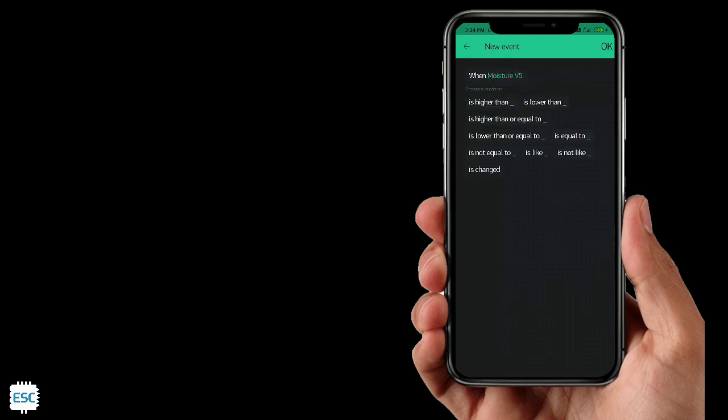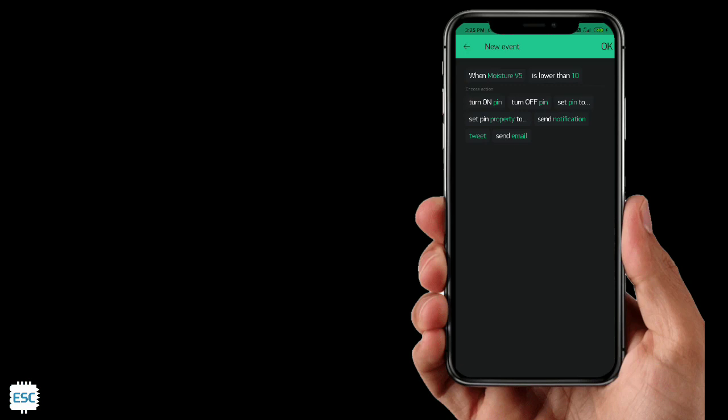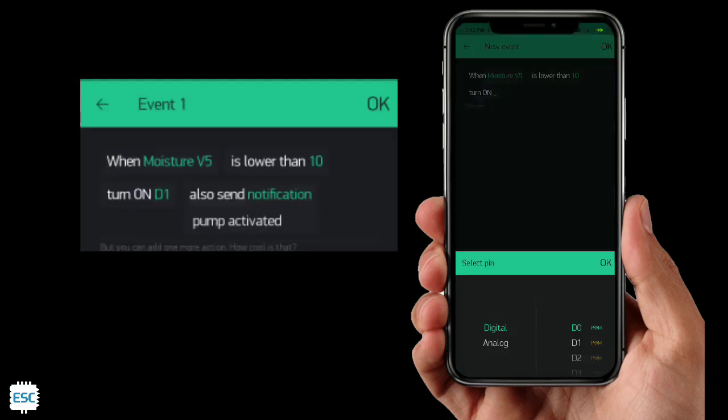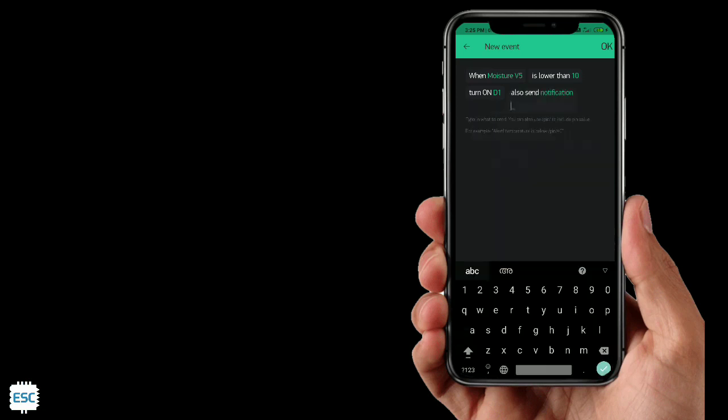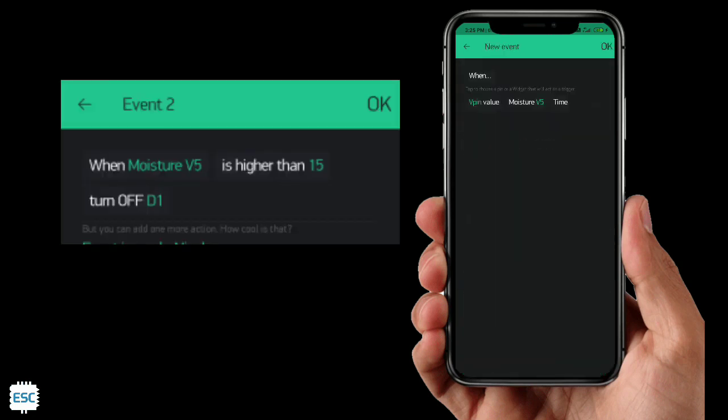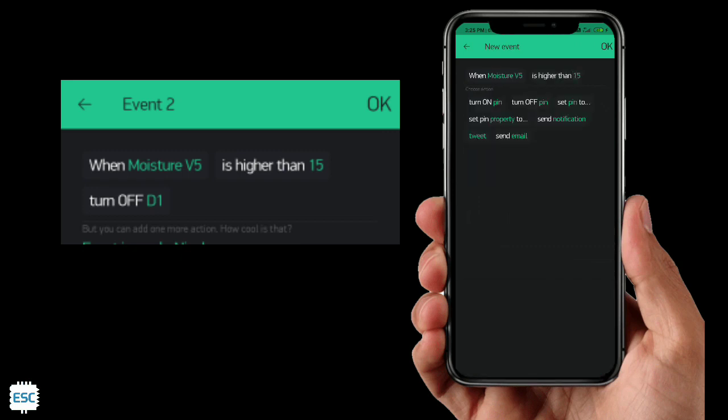When moisture V5 is lower than 10, turn on pin D1 and also send notification. You can edit the notification there. I added "pump actuated" as notification and also add one more event: when moisture V5 is higher than 15, turn off D1.